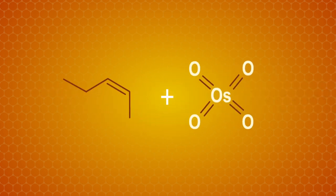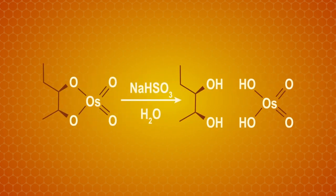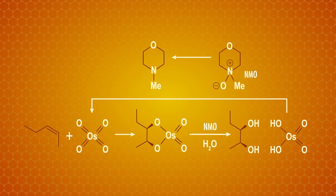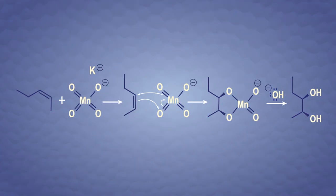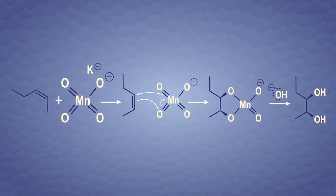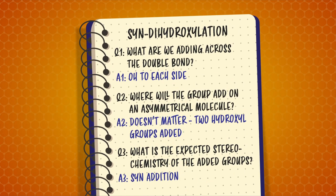The first step in this reaction is the formation of an osmate ester, which is why our hydroxyl groups end up syn — the osmium reagent approaches the double bond from one face. In the reduction step, sodium bisulfite bonds to the osmate ester and helps it break apart in water. If we use osmium tetraoxide with NMO, the NMO breaks up the osmate ester and gives up one of its oxygens to regenerate osmium tetraoxide, making the reaction catalytic in osmium. The other twin reaction uses potassium permanganate as the metal catalyst in the first oxidation step, with cold basic conditions like sodium hydroxide in an icy cold solution. Here's our card to sum up syn-dihydroxylation.